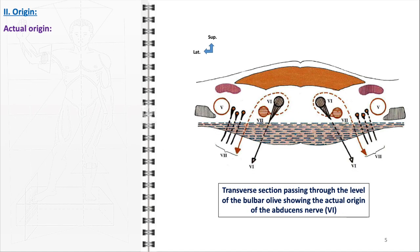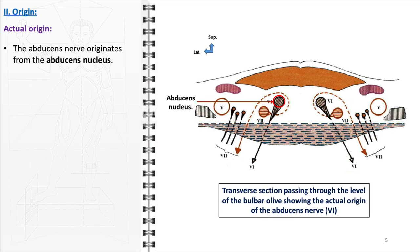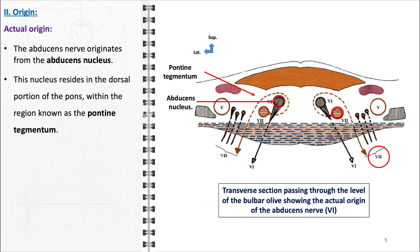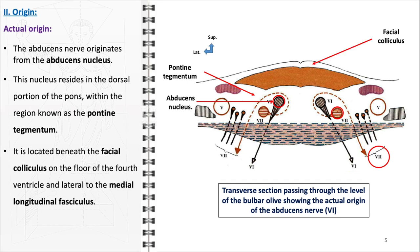The actual origin of the abducens nerve is deeply rooted in the brainstem, specifically originating from the abducens nucleus. This nucleus is strategically positioned in the dorsal portion of the pons, nestled within a region referred to as the pontine tegmentum. Situated beneath the facial colliculus, which is a notable elevation on the floor of the fourth ventricle, the abducens nucleus holds a significant place in the brainstem's anatomy. The facial colliculus is formed by the internal looping of the facial nerve fibers around the abducens nucleus, creating a distinctive topographical relationship.